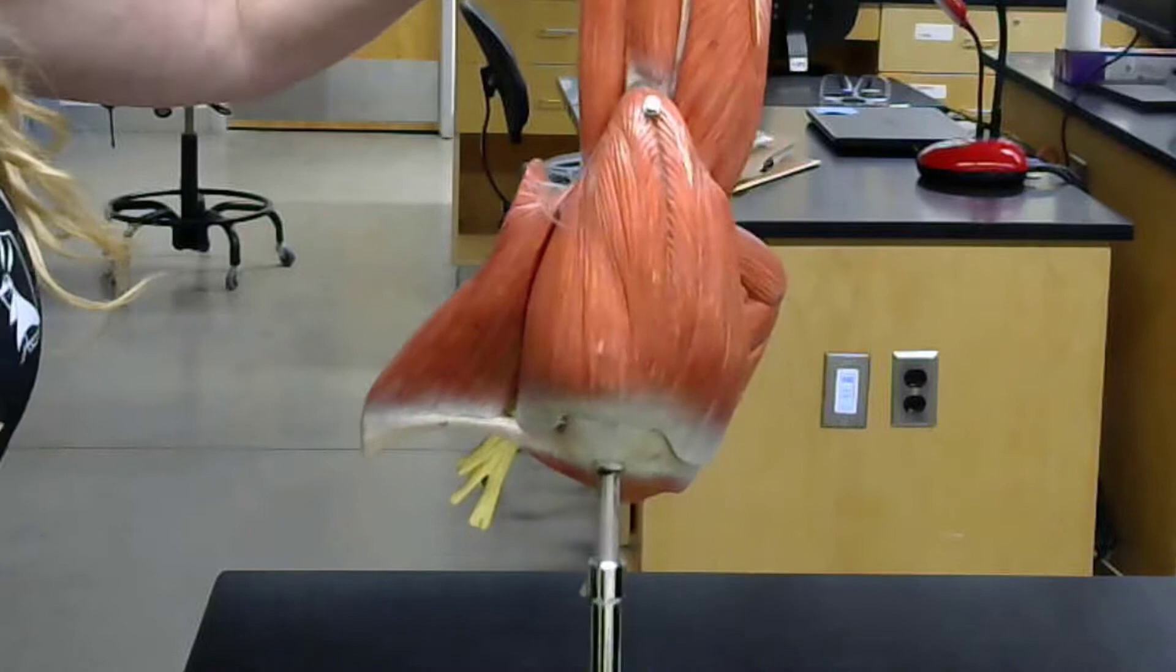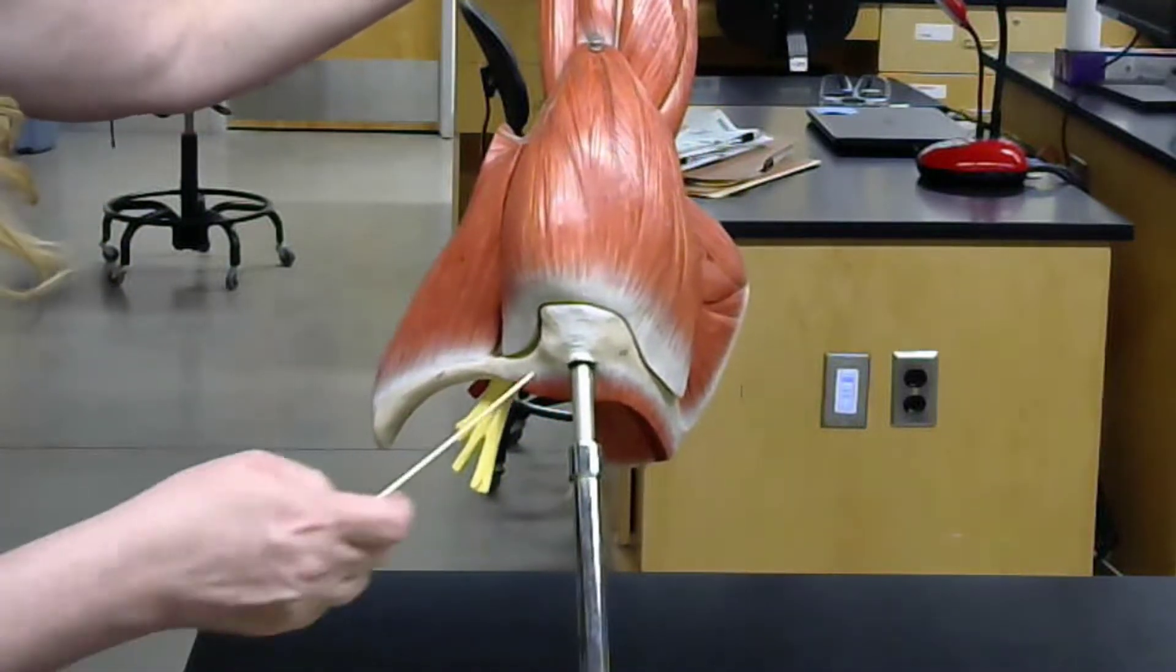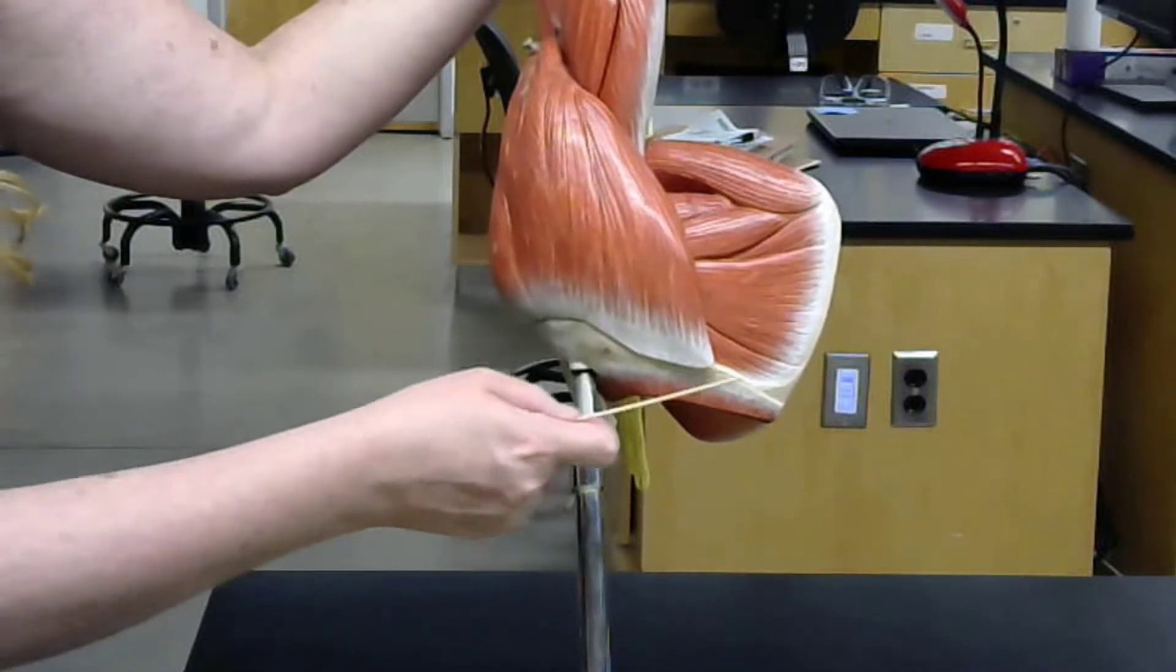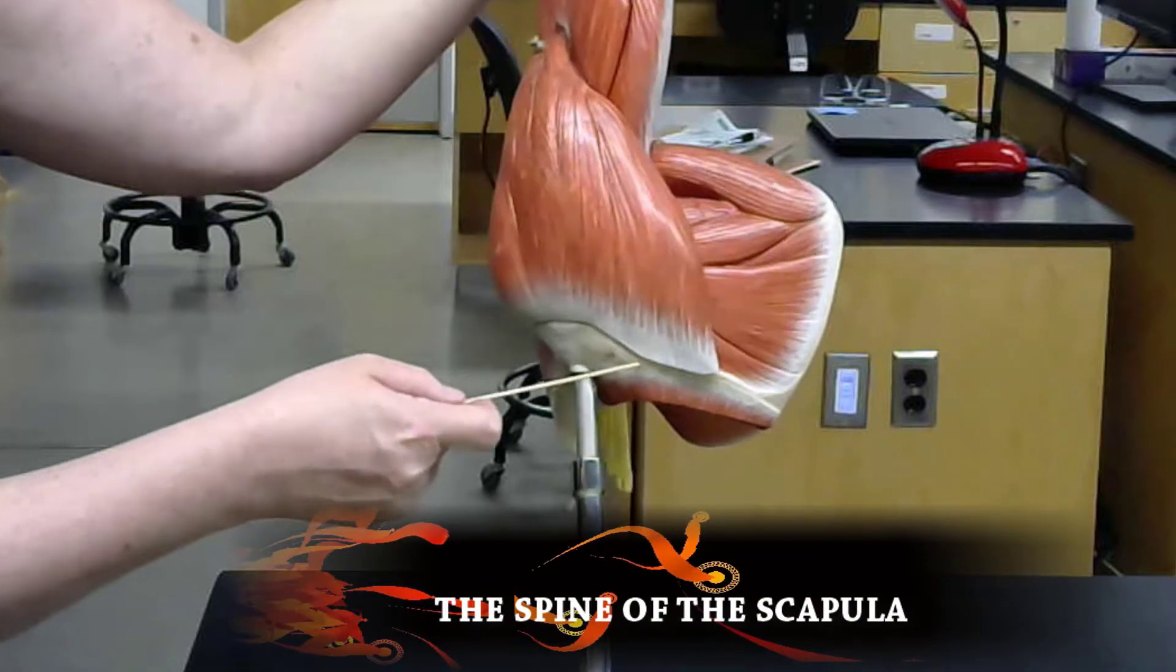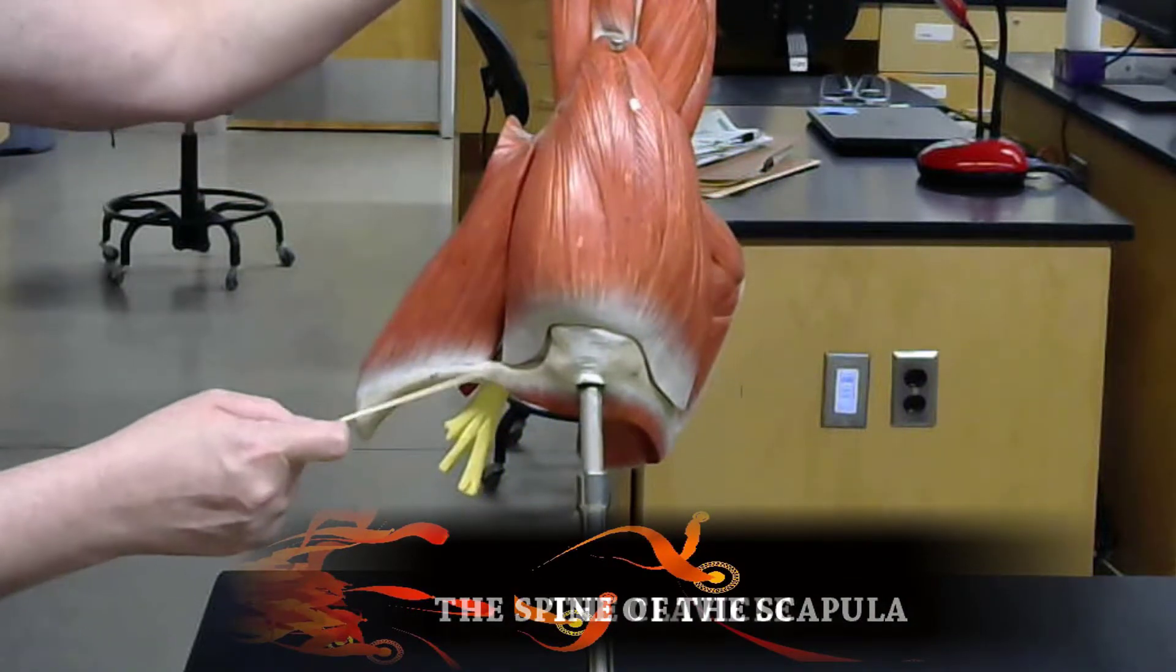If I tilt this, you can get a better orientation. This here, this is the spine of the scapula, and just for orientation, if you look at this, this is going to be the clavicle.